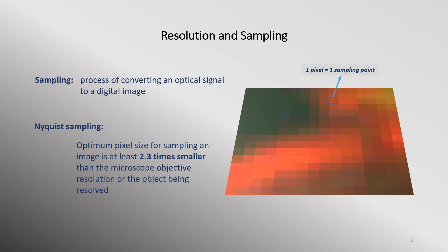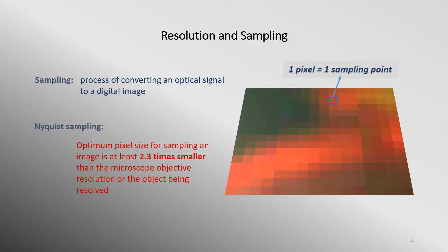For a digital image to have any meaning, sufficient sampling of the optical image is necessary. Remember that each pixel of an image is a sampling point of the original signal. In microscopy, it is important that the Nyquist sampling criterion is satisfied, especially when discriminating small structures. Nyquist sampling dictates that in order to optimally represent an optical signal in digital space, the pixel size of the digital image needs to be at least 2.3 times smaller than the calculated resolution of the objective or the object being resolved. For example, if the object you are trying to resolve is 1 micron, the pixel size will need to be around 2.3 times smaller than 1 micron. If the pixel is bigger than this, there is no way of knowing that what looks like a single object is actually only one and not many.